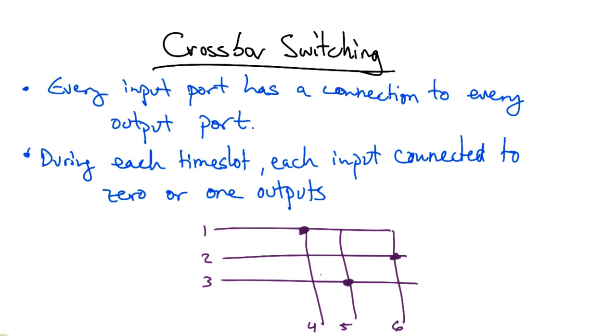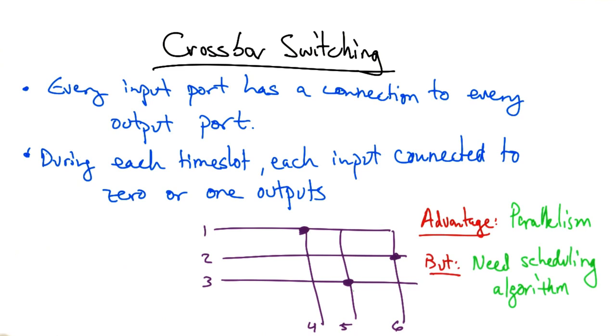But we could connect 2 to 6 and 3 to 5 in the same time slot without introducing contention. So the advantage of this design is that it can exploit parallelism by allowing multiple packets to be forwarded across the interconnect in parallel.